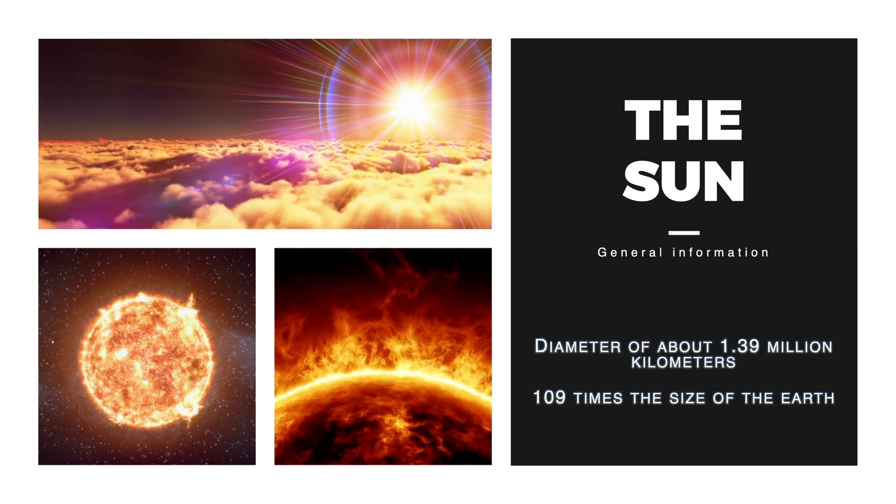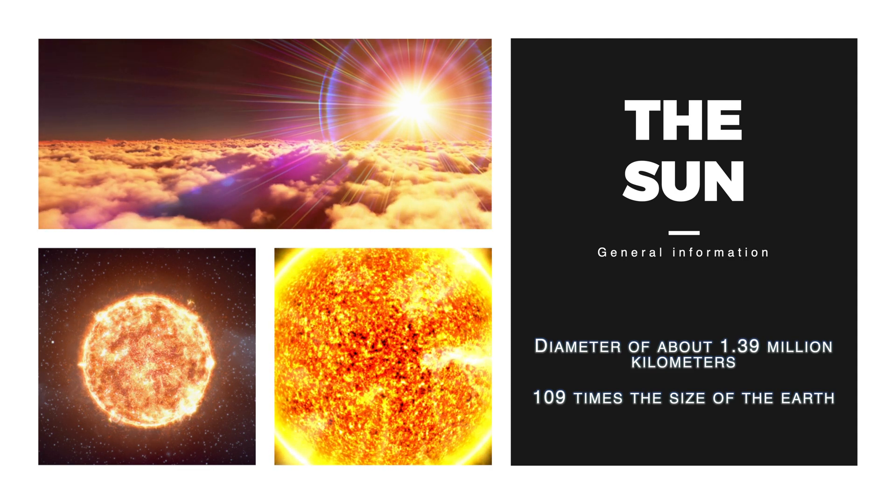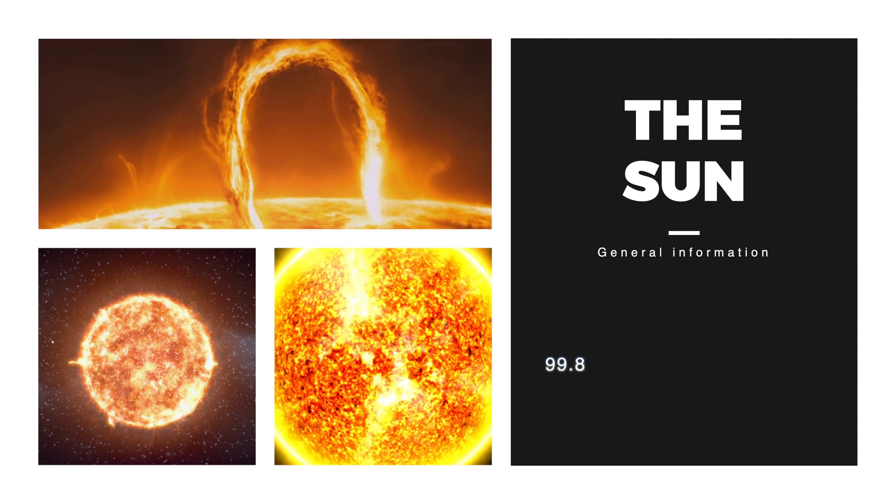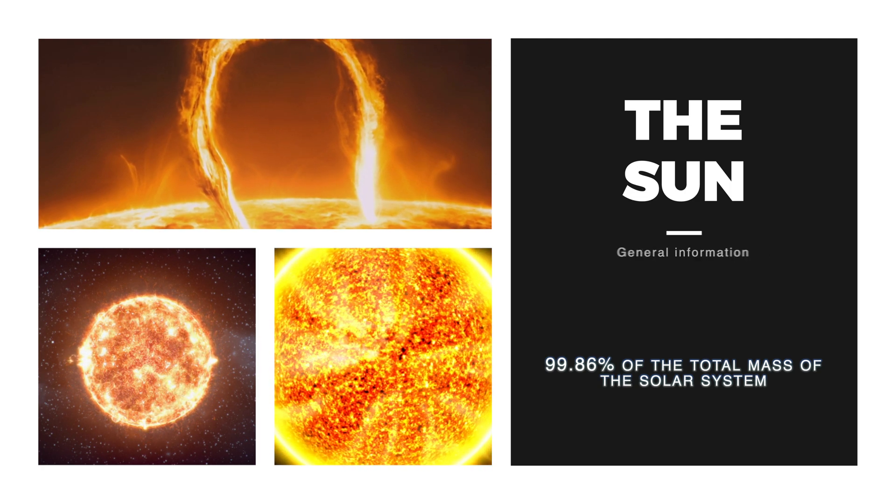With a diameter of about 1.39 million kilometers, the Sun is around 109 times larger than Earth. The Sun accounts for about 99.86% of the total mass of the solar system.